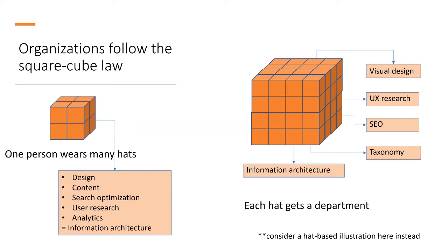Under all those different hats, that one brain manages the alignment and produces something like a coherent implicit information architecture.